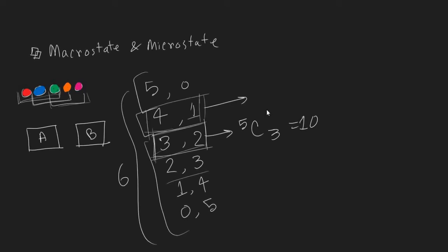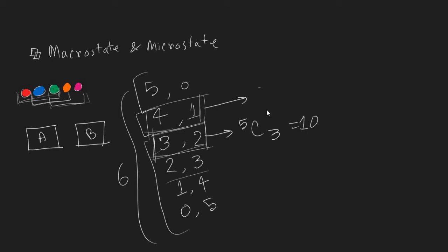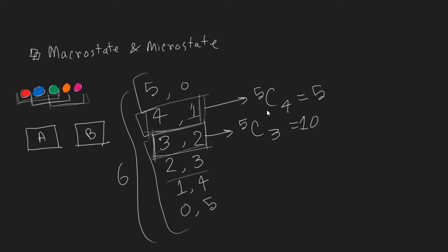In this configuration, where we can put 4 balls in box A and 1 ball in box B, we can have combinations like this, 5C4. So, it will become 5.